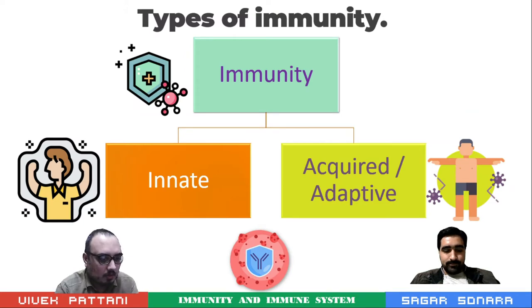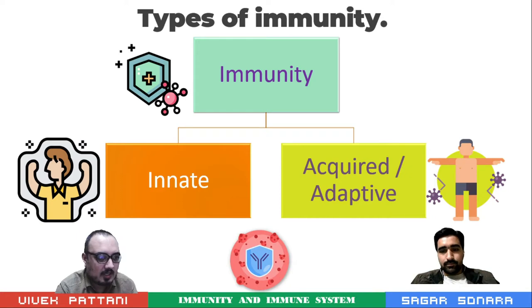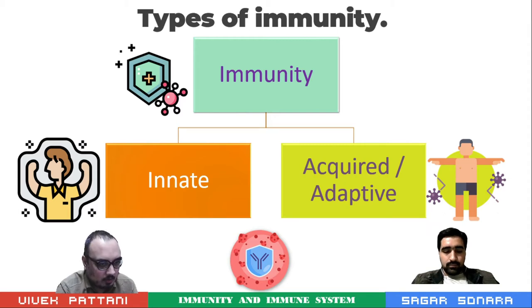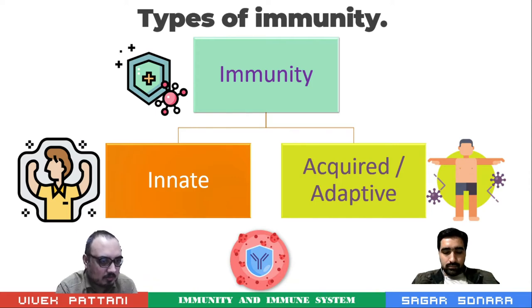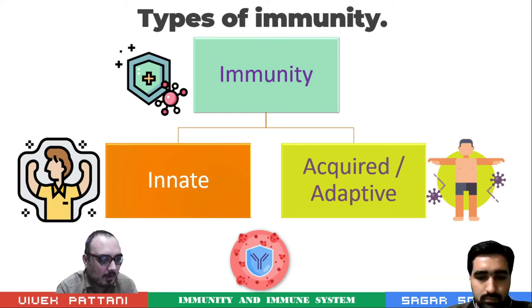First of all, what is immunity? Immunity simply can be defined as the way in which the body can protect itself from the invasion by pathogenic microorganisms and provide defense against their harmful effects. Simply, a physiological function of the immune system is to protect against infectious microbes and non-infectious macromolecules.